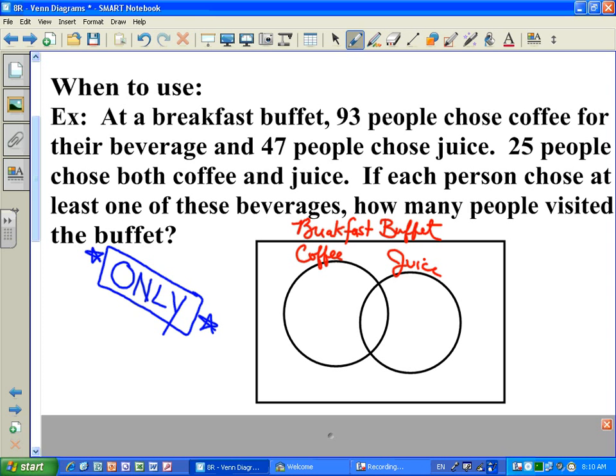Right off the bat, students will be putting in 93 people into the coffee circle, and they'll make the mistake of putting 93 right here. That would be the case if only 93 people were to choose coffee. It does not specify that 93 people, it just says 93 people totally had coffee. So what we're going to do is put it outside the circle, because the entire coffee circle has to be 93 people.